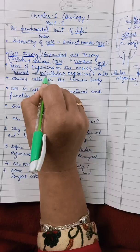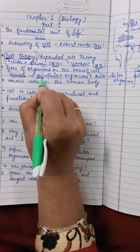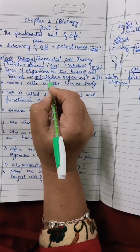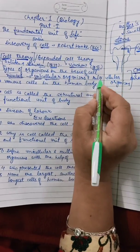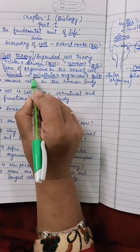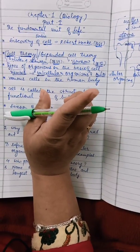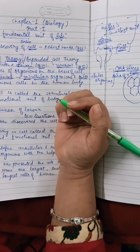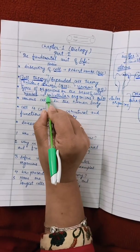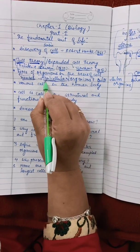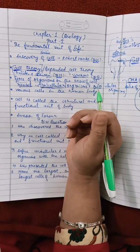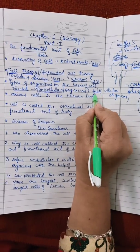Uni means single and cellular means cells. Organisms made up of a single cell are known as unicellular organisms, and organisms made up of more than one cell are known as multicellular organisms. Unicellular organisms are too small to be seen with the naked eye, so we use a microscope. However, the ostrich egg is the largest single cell in the world.